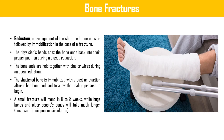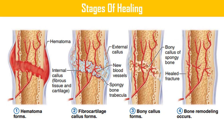Small fractures will mend in six to eight weeks, while large bones and older people's bones will take much longer because of poor circulation. There are four stages of bone healing: hematoma forms, fibrocartilage callus forms, bony callus forms, and bone remodeling occurs. Let's look at each step in detail.